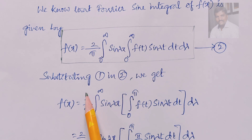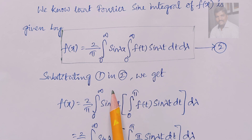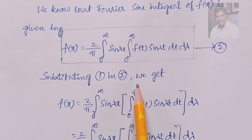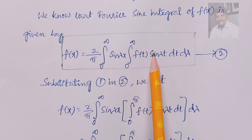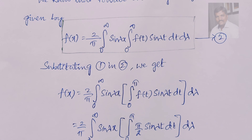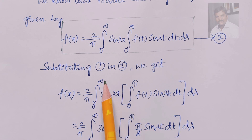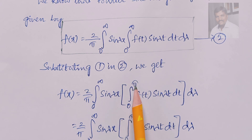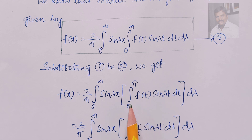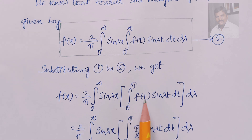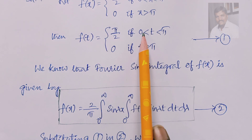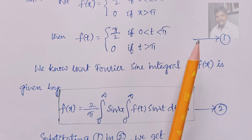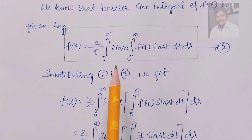Substituting equation (1) into equation (2), we get f(x) equals (2/π) times the integral from 0 to infinity of sin(λx) times the integral from 0 to π of f(t) sin(λt) dt dλ, where f(t) equals π/2 for t from 0 to π, and 0 for t greater than π.